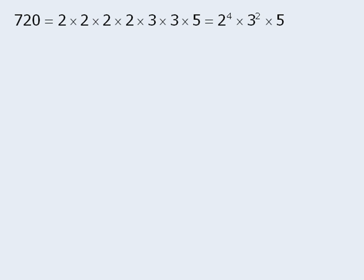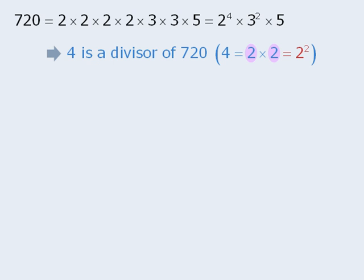Given the prime factorization of 720, we can draw several conclusions about the divisors of 720. For example, 4 is a divisor of 720, since 4 is equal to 2 times 2, and in the prime factorization of 720, we have 2 times 2.